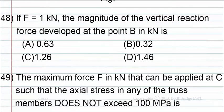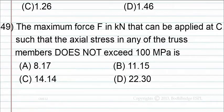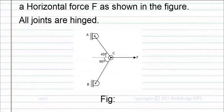Question 48: If F is equal to 1 kN, the magnitude of the vertical reaction force developed at point B in kN is: Option A 0.63, Option B 0.32, Option C 1.26, Option D 1.46. Question 49: The maximum force F in kN that can be applied at C such that the axial stress in any of the truss members does not exceed 100 MPa is: Option A 8.17, Option B 11.15, Option C 14.14, Option D 22.30.